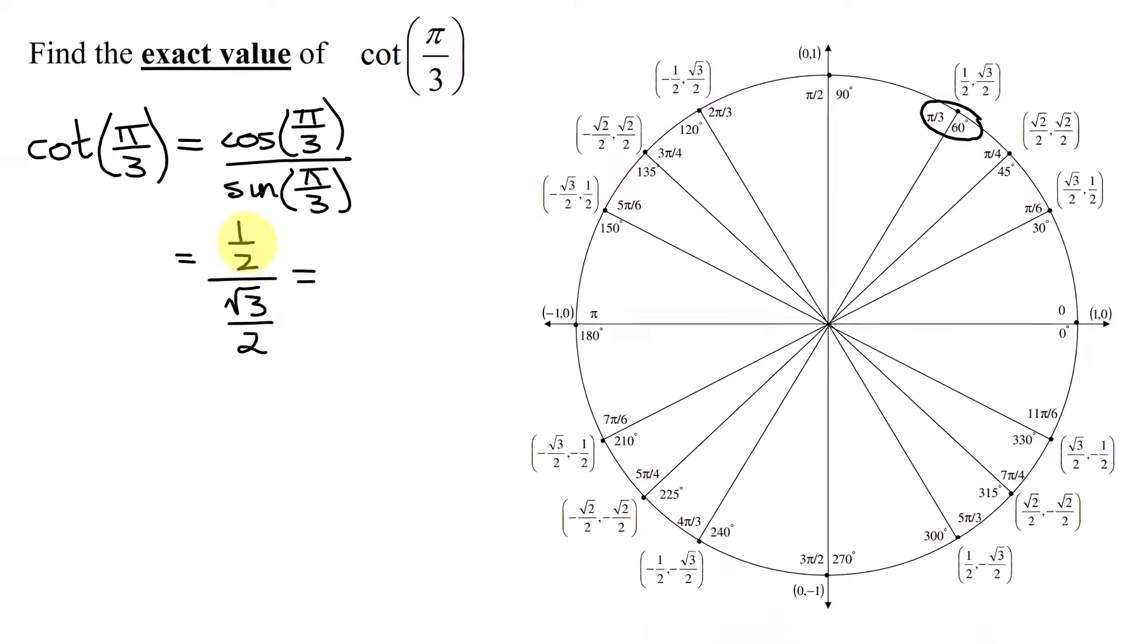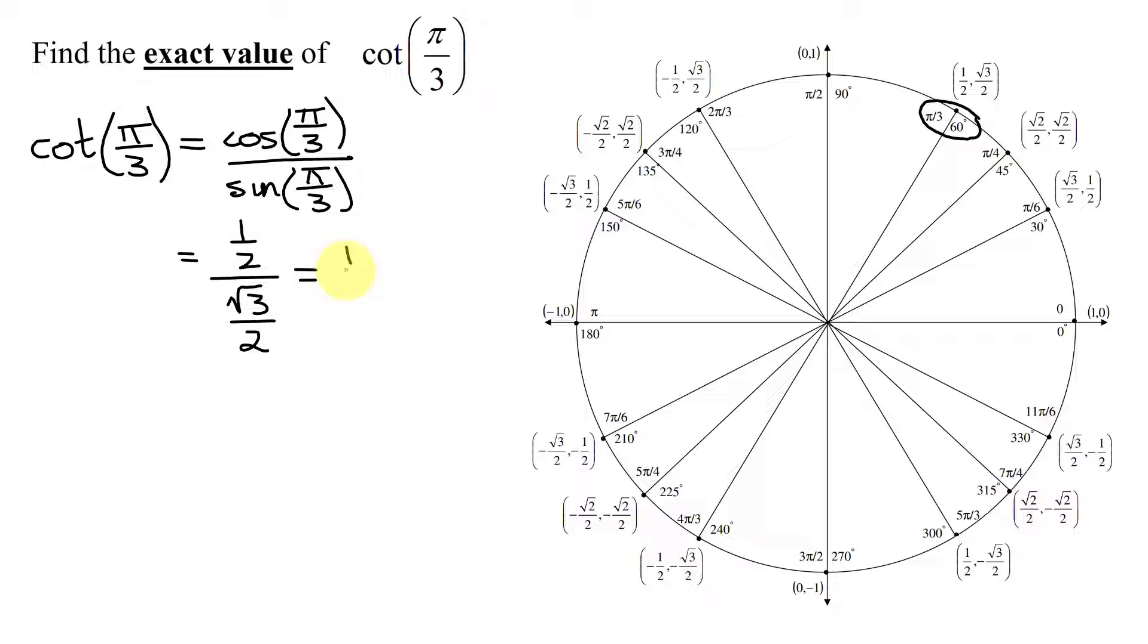Now, to divide fractions, you take the fraction in the numerator, 1 half, and multiply it by the reciprocal of the fraction in the denominator. How do you take the reciprocal of a fraction? You just flip it upside down, so I'm going to get 2 divided by the square root of 3. My two 2's reduce, I get 1 times 1 is 1, all divided by 1 times the square root of 3 is the square root of 3.